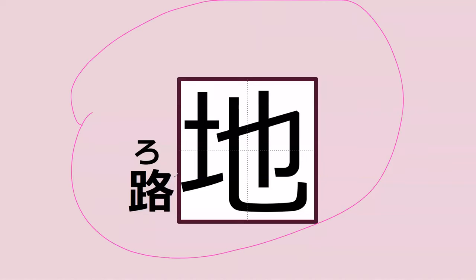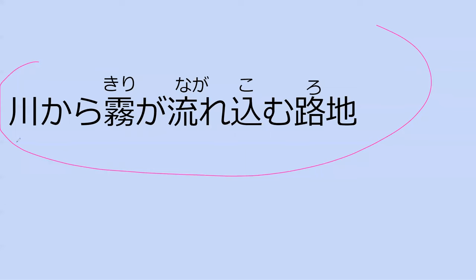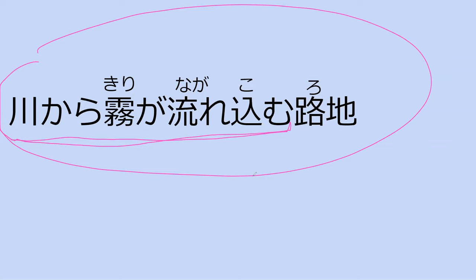Do you know how this is pronounced? It means 'alleyway.' — Roji. — Perfect. So let's go read this sentence — it's an example of a relative clause. Tell me what it means. — 'Kawa kara kiri ga nagarekomu roji' — meaning, from the river the mist flows into the alley. — Perfect, that's exactly what it means.